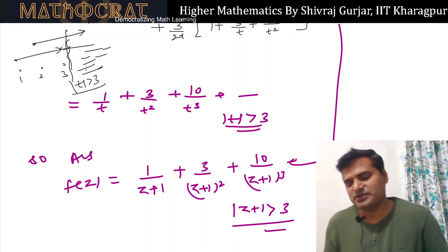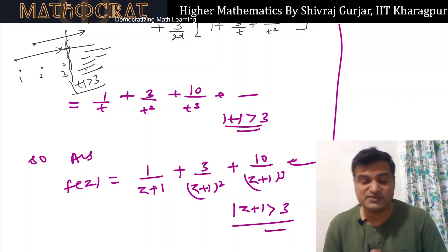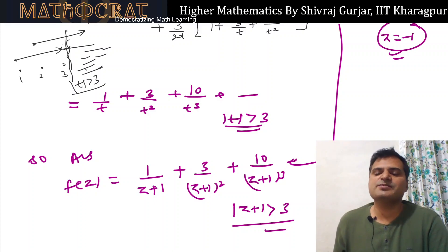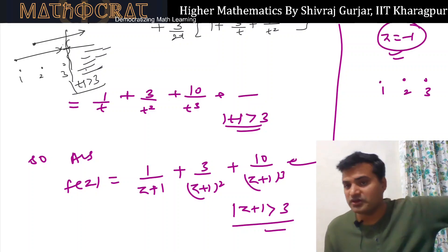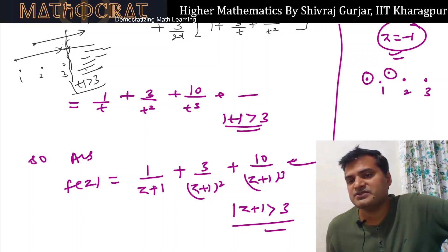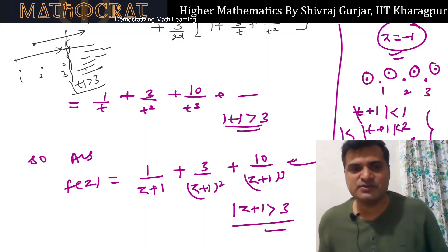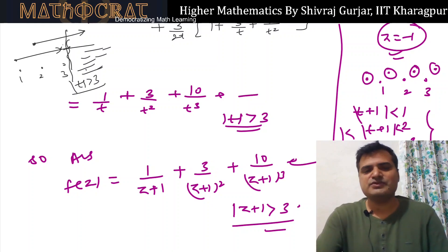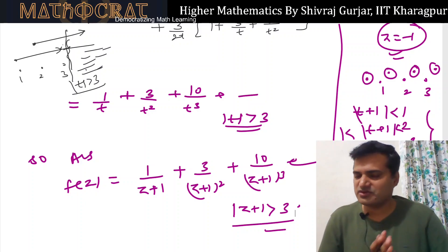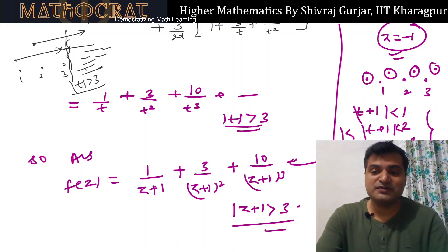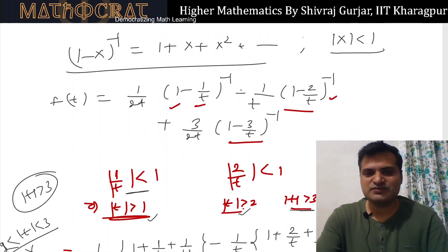If the question had asked for all possible expansions of f(z) about z = -1, we would consider all four regions: |t| < 1, 1 < |t| < 2, 2 < |t| < 3, and |t| > 3, and expand accordingly. But since we were only asked for the region |z+1| > 3, life was simpler. This type of question is a 20-marker and is frequently asked — practice Laurent series carefully.